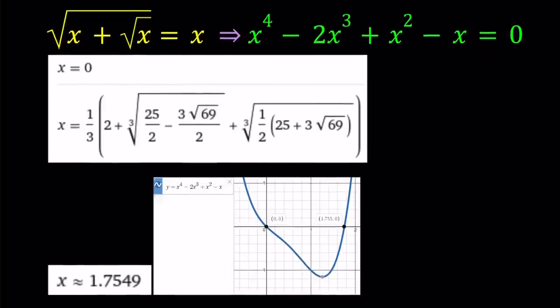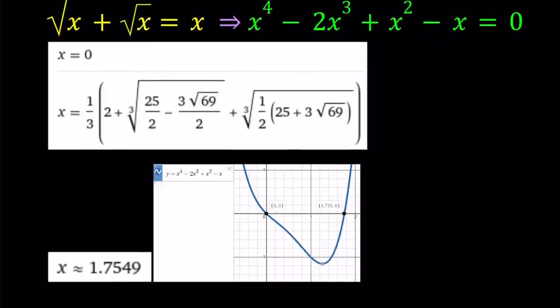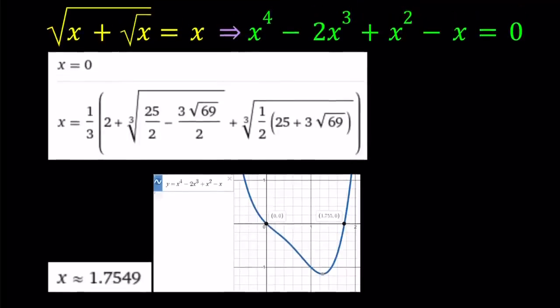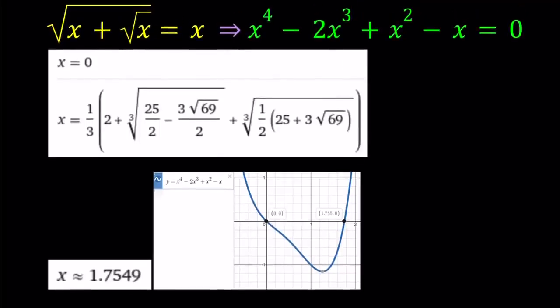Approximately, it is 1.7549. And you can pretty much see the graph of the quartic. It has two x intercepts, one of which is x equals 0. And the other one is just the solution that we're looking for. Obviously, x equals 0 is going to be a valid solution because square root of 0 is just equal to 0. Great. So there are two solutions to this equation then, right? Great.